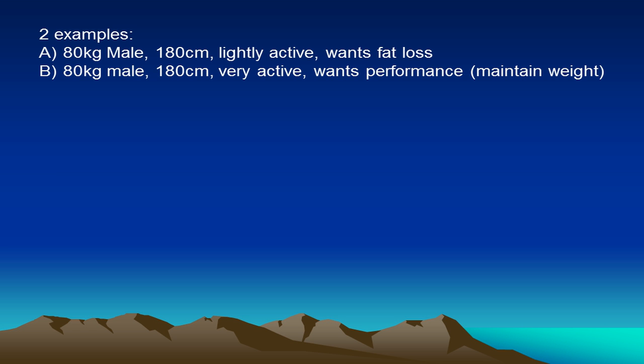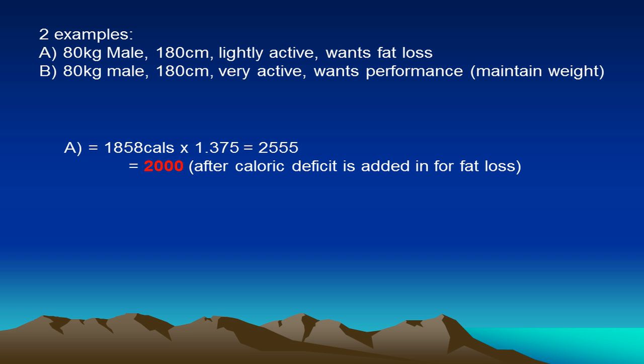What we're going to look at today is that of these two people, what we'll find is that the recommended daily intake of something like protein doesn't change that much. The absolute value for this 80 kilo male at 180 centimeters — protein intake is usually somewhere between 1 and 2 grams per kilo, so somewhere between 80 and 160 grams per day, and it would never really change much more than that. In our example of 30% of caloric intake, that's going to equate roughly to about 150 grams.